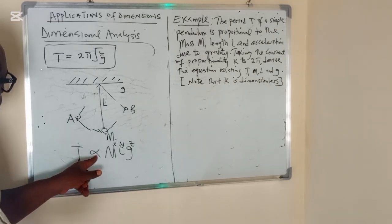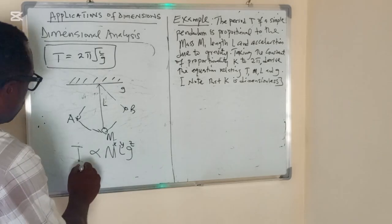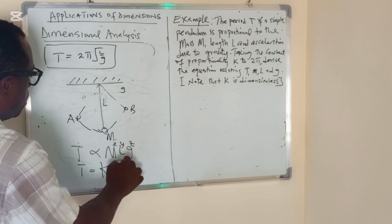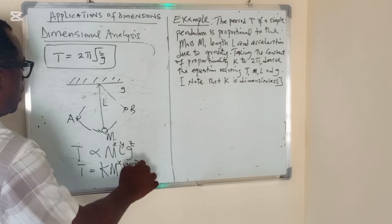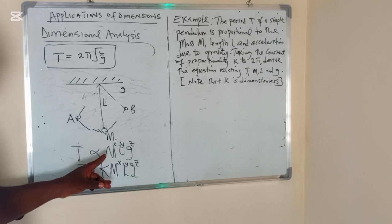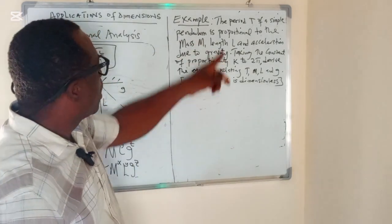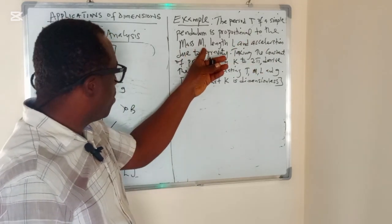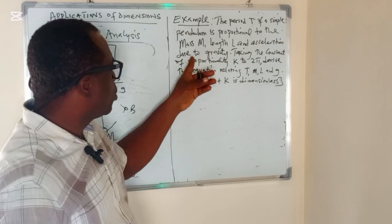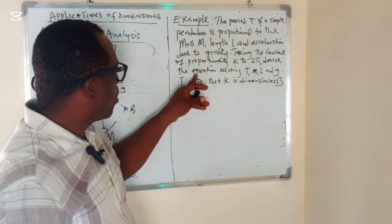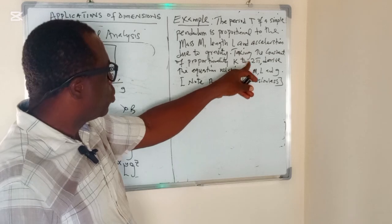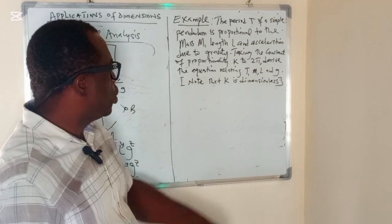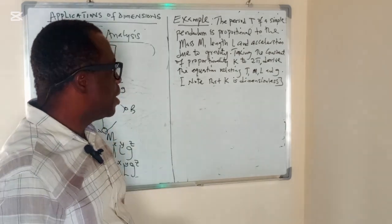When we introduce an equality sign, we introduce a constant K, giving us T = K·M^X·L^Y·G^Z. The example states: the period T of a simple pendulum is proportional to mass M, length L, and acceleration due to gravity G. Taking the constant of proportionality K equal to 2π, derive the equation relating T, M, L, and G. Note that K is a dimensionless constant.